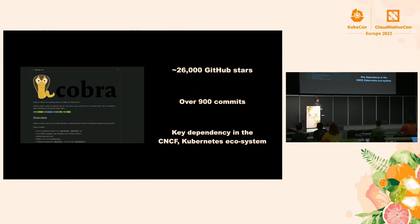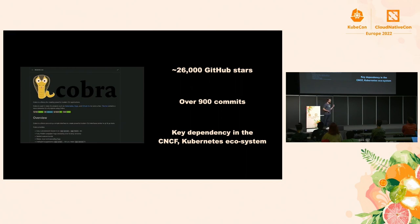Just to touch on a few projects that use Cobra: Kubernetes itself, KubeCuddle, Helm, Tanzu at VMware, Docker, etcd, Istio, Linkerd, the GitHub CLI. If it was written in Go, it probably uses Cobra.